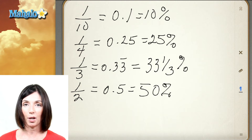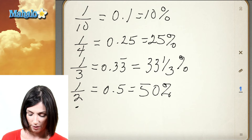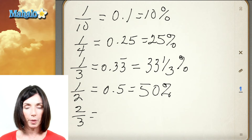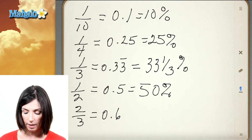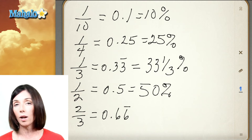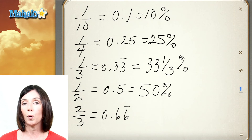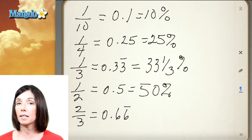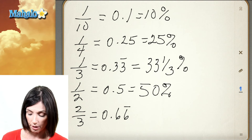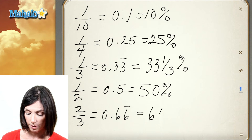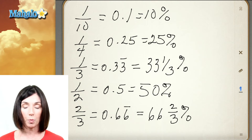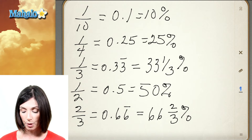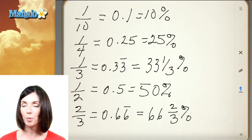So there's another handy one to know and that's two-thirds. Two-thirds written as a decimal is 0.66 repeating. You'll sometimes see it approximated as 0.667. As a percentage, it's 66 and two-thirds percent. Two-thirds is two times one-third and 66 and two-thirds percent is two times 33 and a third percent.